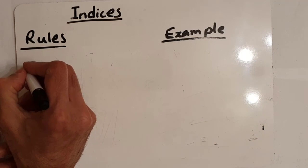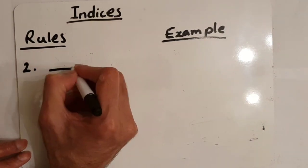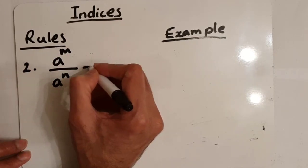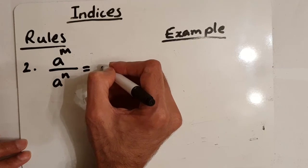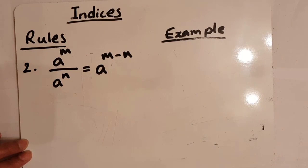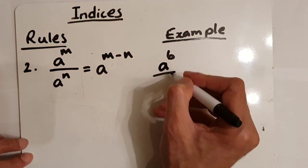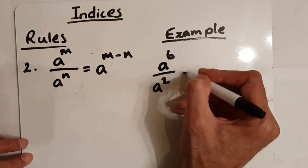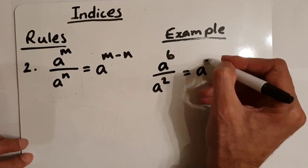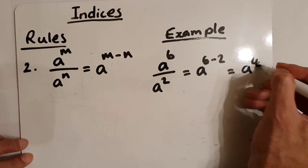Rule number two is when you divide. So if you have a to the power of m divided by a to the power of n, we take away the power, giving us a to the power of m take away n. For example, we have a to the power of six divided by a to the power of two. We take away two from six, so we get a to the power of six take away two, which gives us an answer of a to the power of four.